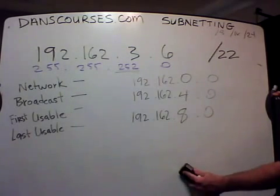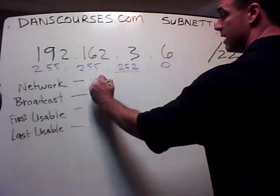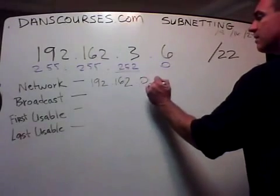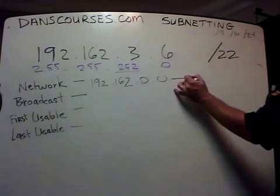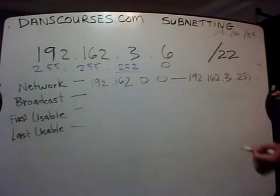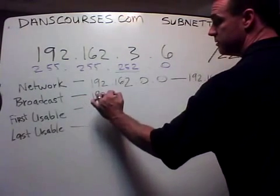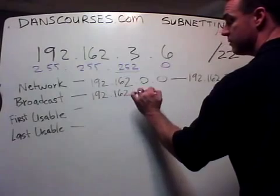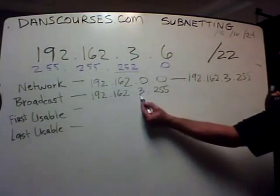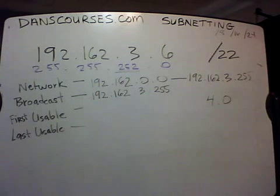The network number goes up by 4 in the third octet. So the next network is 12, the next network is 16. So in this scenario, the network is 192.162.0.0. It goes all the way to 192.162.3.255. So the broadcast is 192.162.3.255. Why? What's the next number in the sequence? The next number would be 4.0, which is the next network.